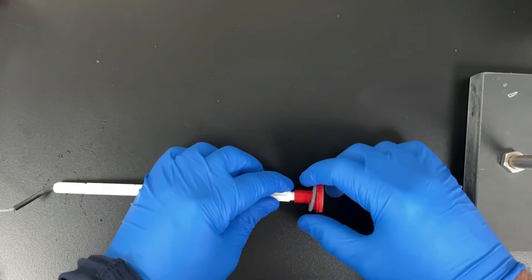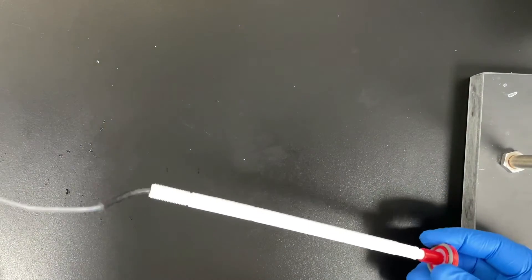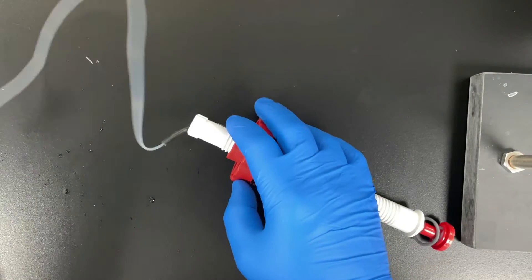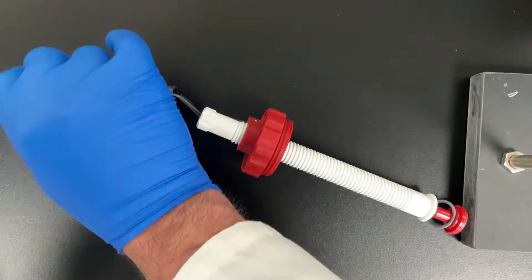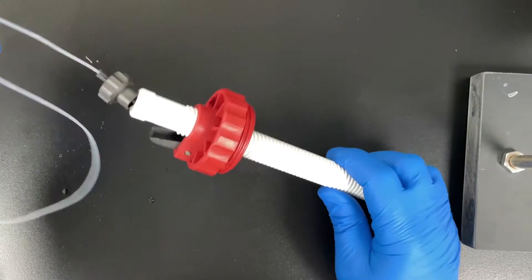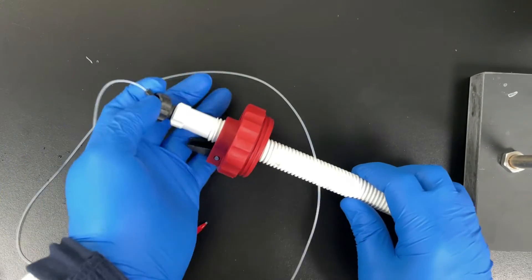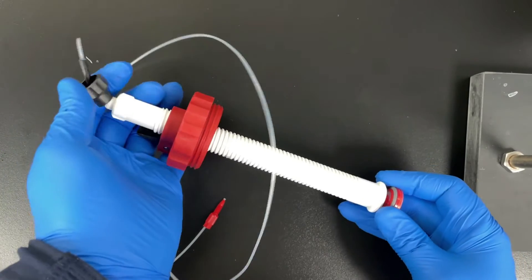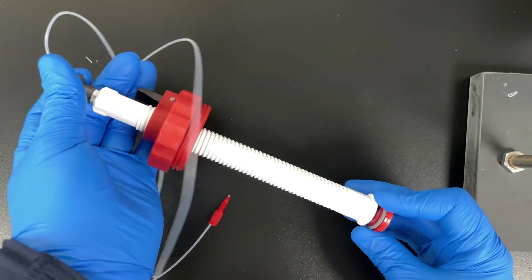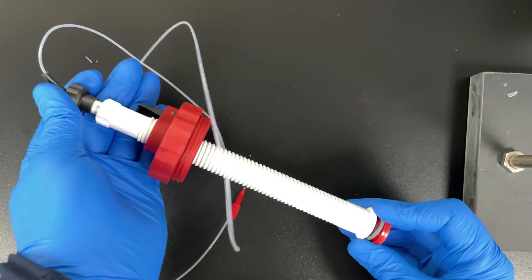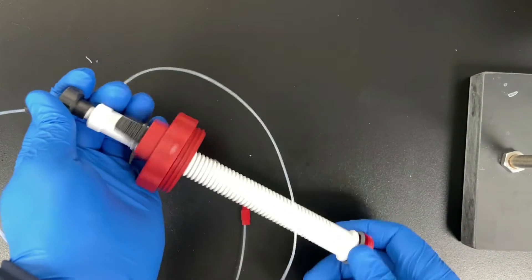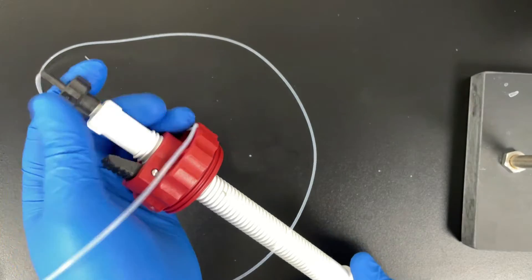When we put the filter screen back on, we want to make sure that it fits snugly onto the distributor. And then we're going to take the black nut and thread it back onto the central stem once we have the gasket fit over it there just right. This took me a second. There we go.